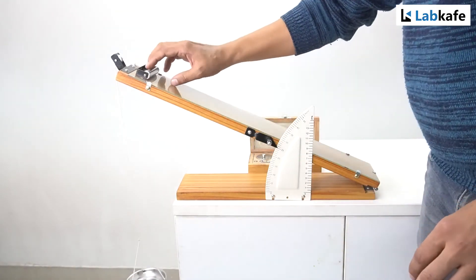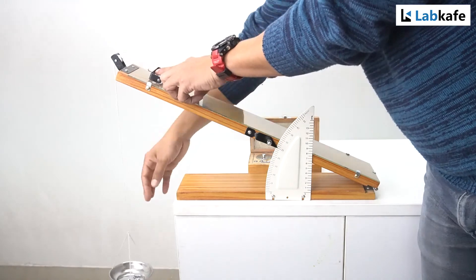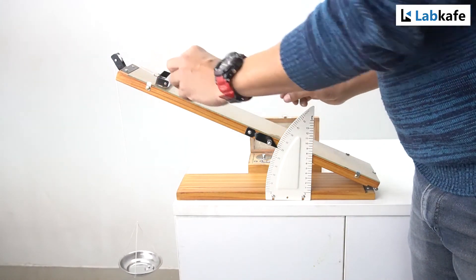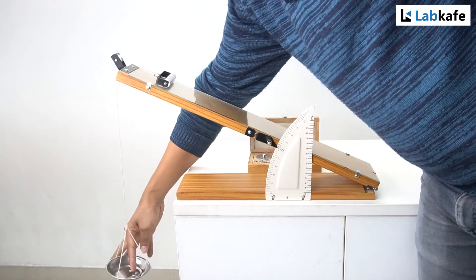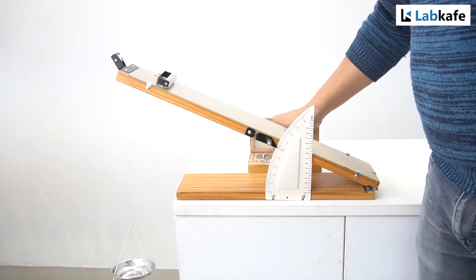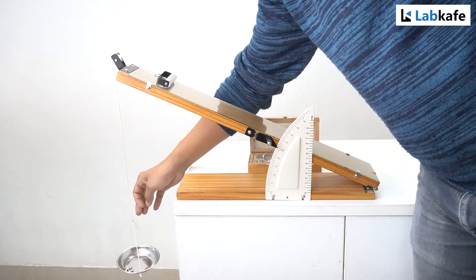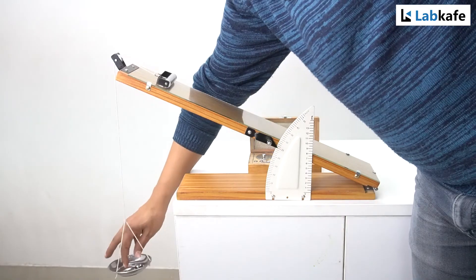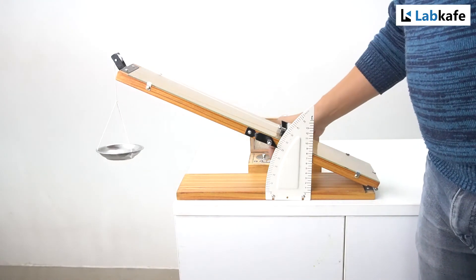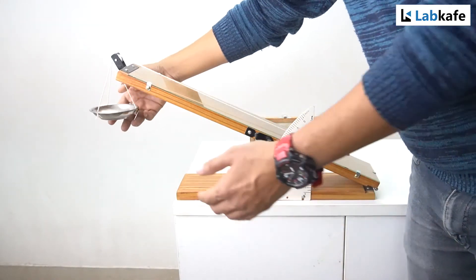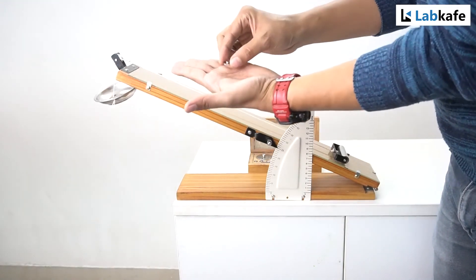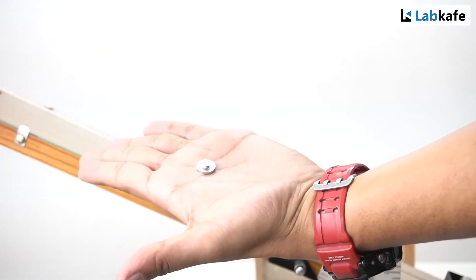Now remove some weights from the pan slowly in steps and find the exact weight at which the roller begins to move downward. We found the weight is 32 grams.